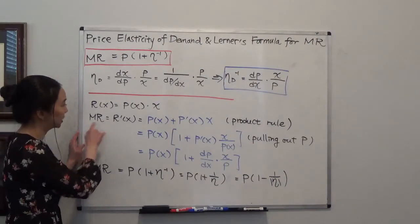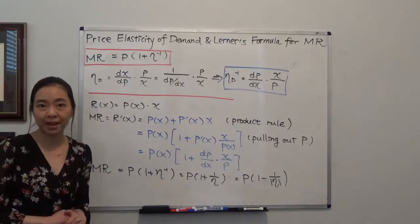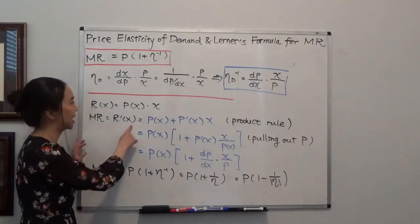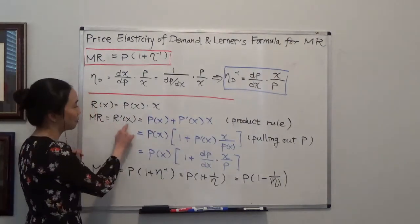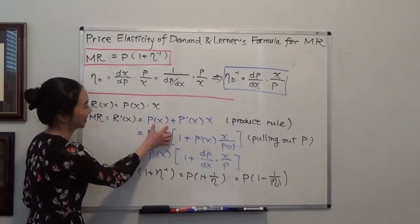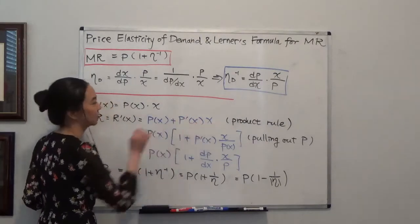And marginal revenue is just a derivative of my revenue with respect to quantity. So MR is R'(x). And I'm going to use the product rule here. So R'(x) is equal to P(x) plus P'(x) times x. That's the product rule.